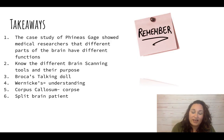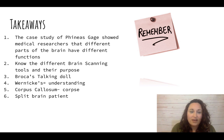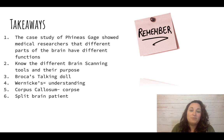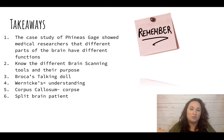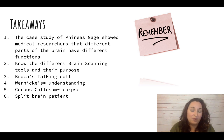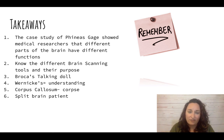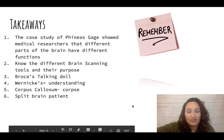Remember the case study of Phineas Gage and why he was important for showing how different parts of the brain do different things. Make sure you understand those brain scanning and imaging tools and what their purpose is. When you think of Broca's and Wernicke's, remember the broken talking doll — it is broken, the doll cannot speak. The corpus callosum: remember that corpse laying over the two hemispheres, connecting the brain, unless you have a split-brain patient in which it is severed. Make sure you understand the heart study. That wraps up Mods 6.1 to 6.4 — see you in class!